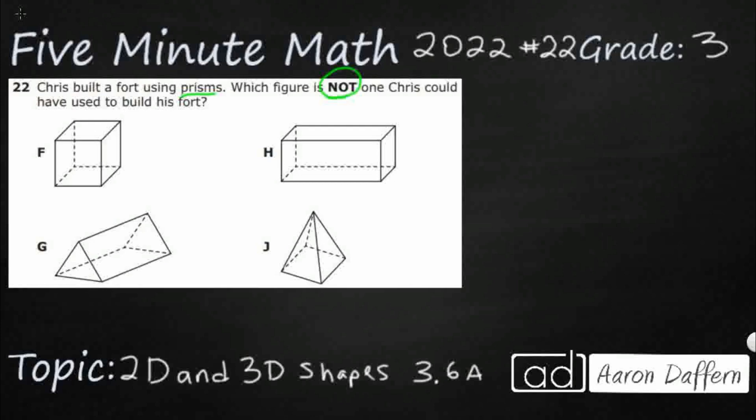Well, let's see if we can just put names on these and help us. We've got a cube. We've got a rectangular prism. We have a triangular prism. And then we have a pyramid. Specifically, it's a square-based pyramid. I don't think that really matters. Just a pyramid.